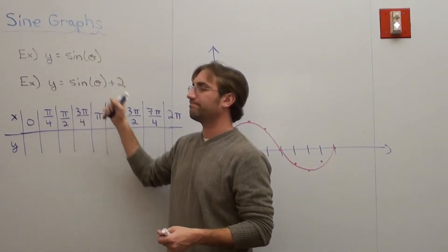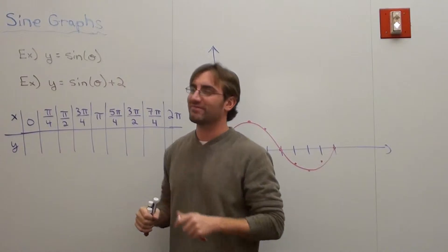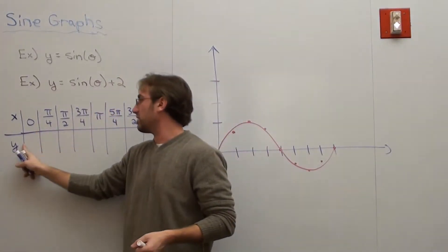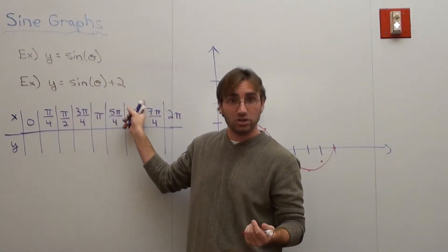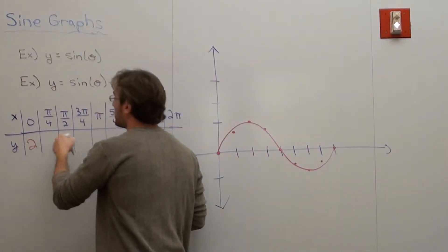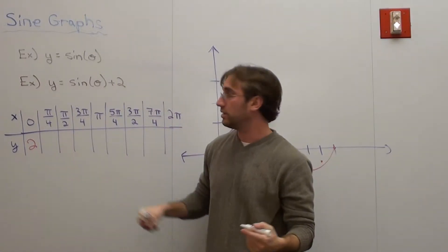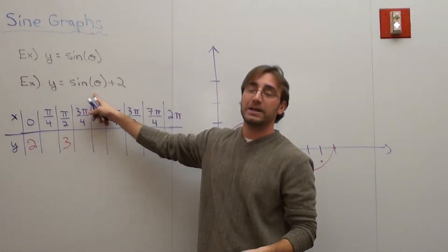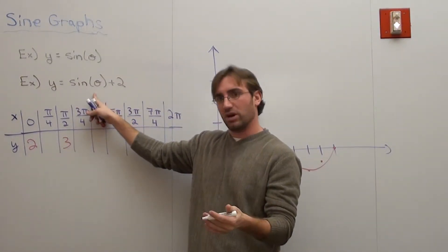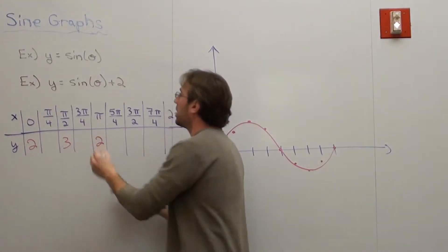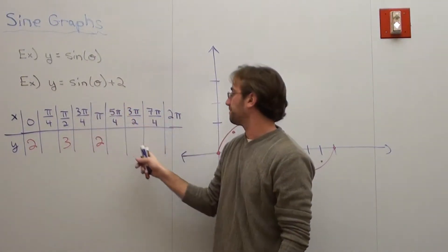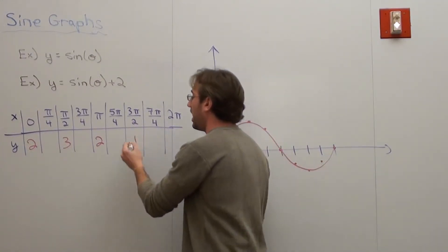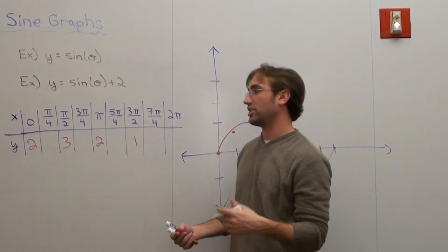The sine of 0 degrees is 0, but when I add 2 to it, it's 2. So, I figure out what the sine... Sine of 0 degrees is 0. So, I put a 0, but after I do that, I add 2 to it. So, the answer is actually 2. Sine of pi over 2 is 1, but when I add 2 to it, it's 3. Sine of pi is 0, but when I add 2 to it, it's 2. Sine of 3 pi over 2 is negative 1, but when I add 2 to it, it's 1.